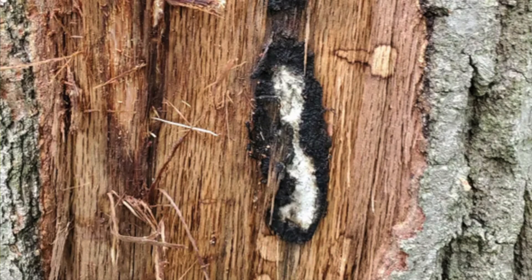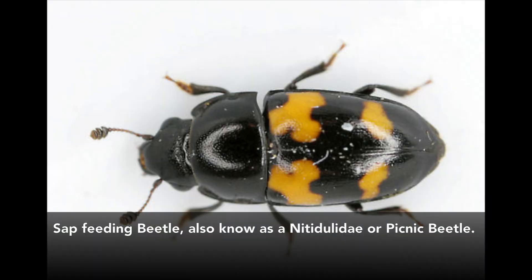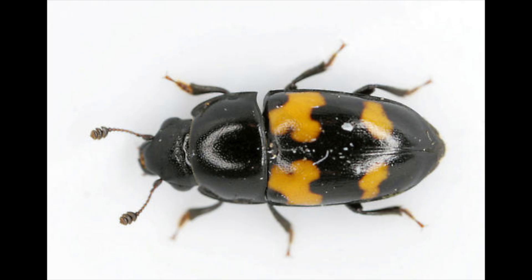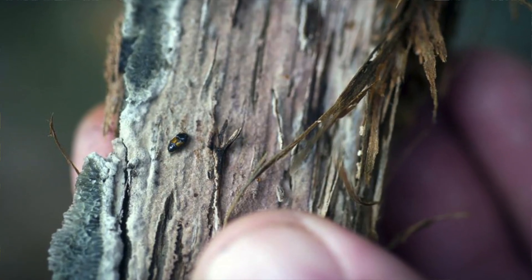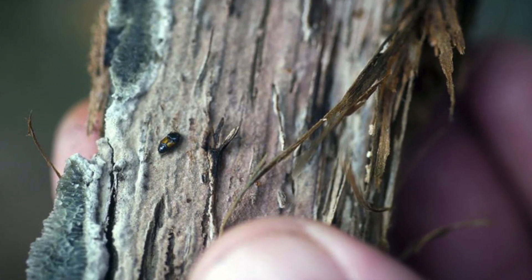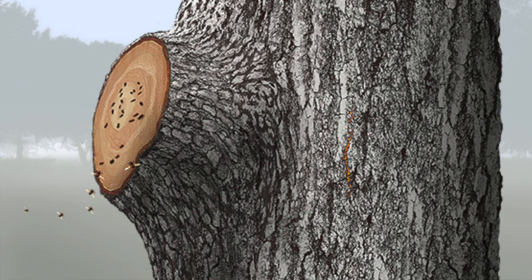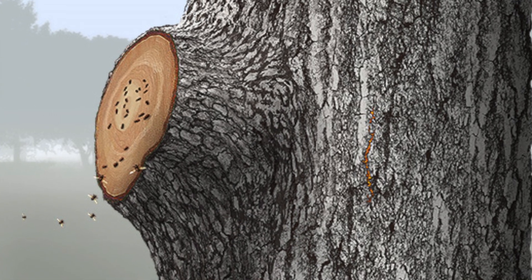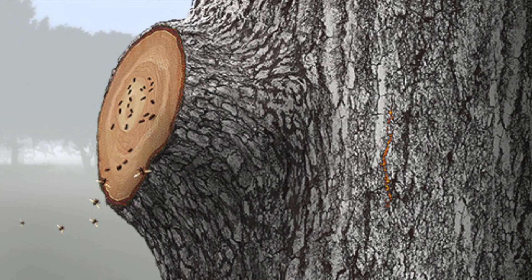However, this also leads to funguses being spread. The above ground spread of oak wilt occurs through sap feeding beetles. The sap feeding beetles are attracted to the fungal spores on currently infected oak wilt trees. The beetles then become covered in spores and are attracted to the chemicals produced by injured oak trees. The beetles then feed on the sap being produced from these injured trees and thus infect the tree with oak wilt.